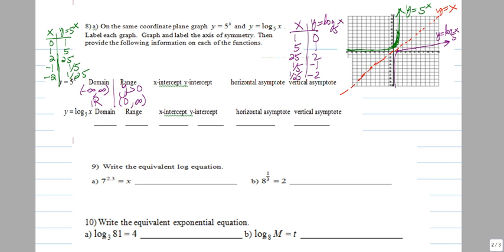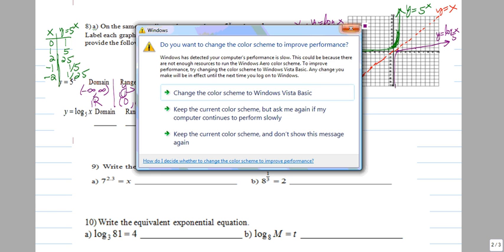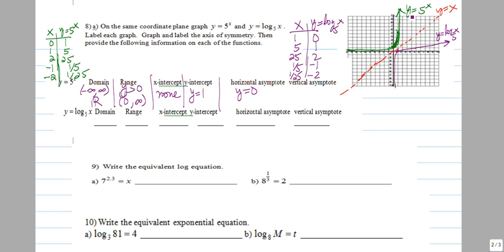The x-intercept—we don't have an x-intercept. It never crosses the x-axis, so that's none. The y-intercept is at one. Horizontal asymptote is the x-axis, so y equals zero. Vertical asymptote—it doesn't have any. Even though it looks like it has a vertical asymptote, it doesn't, because for example at five it's one twenty-five. It's not straightening out vertically. So vertical asymptote is none.